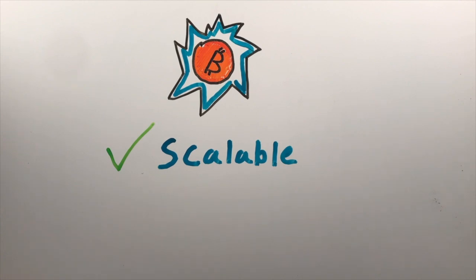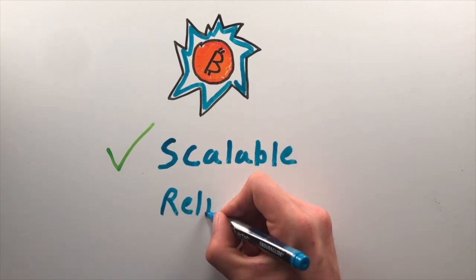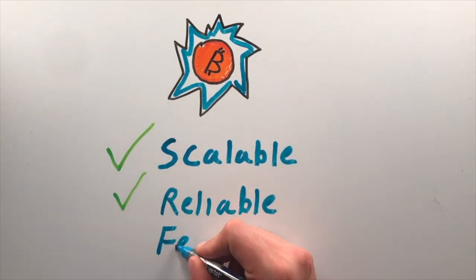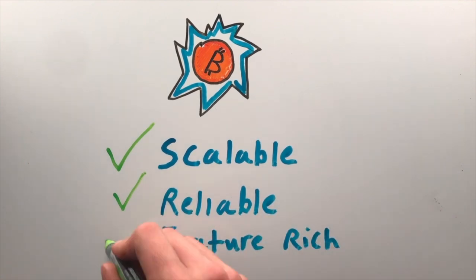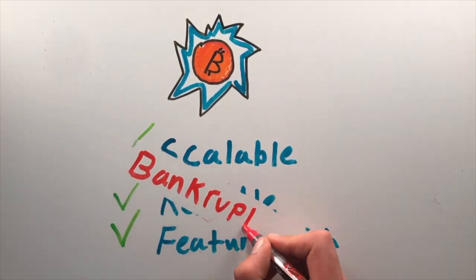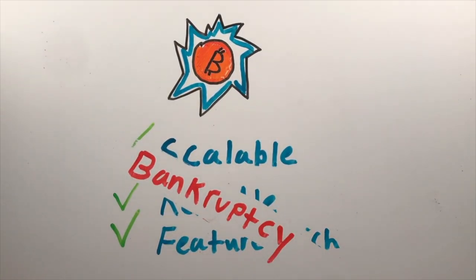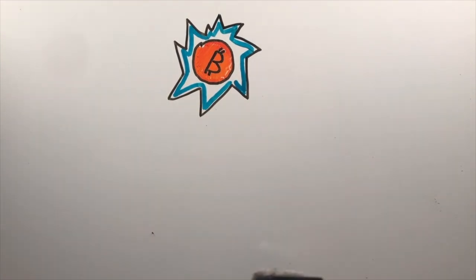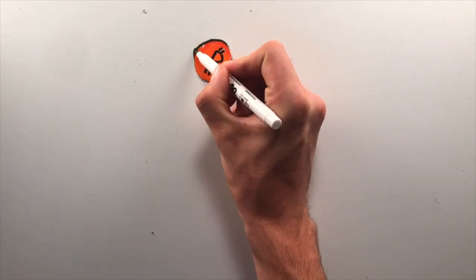You can take this to two extremes. One, if Bitcoin scales perfectly on-chain, has reliable instant transactions, and general smart contract capabilities, there will not be a need for sidechains or second layers. The company will have no source of income and will eventually fail.